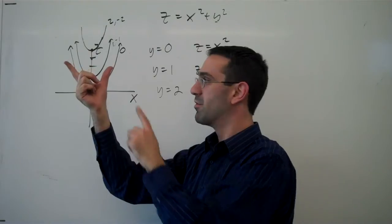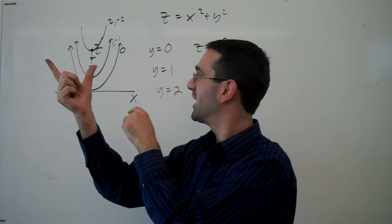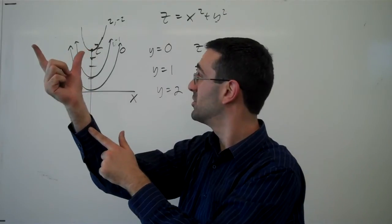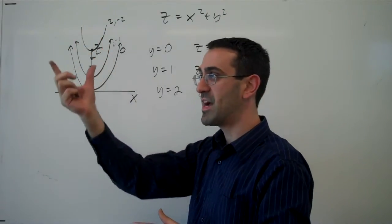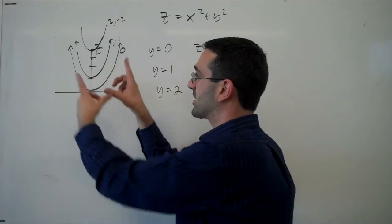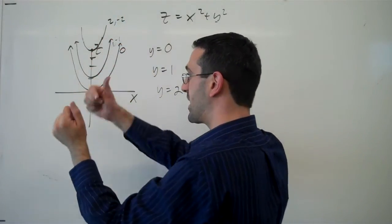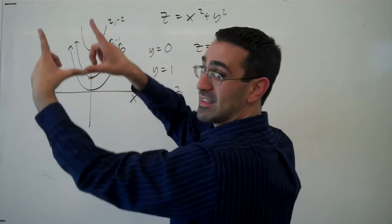And then at a y value of 1, this curve is shifted up a little. At a y value of 2, the curve is shifted up a little more. And so we're imagining these curves happening at different y values. We get these different curves.